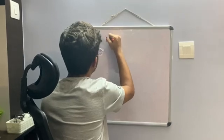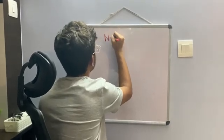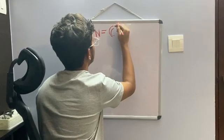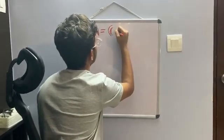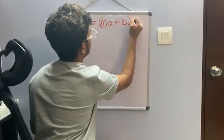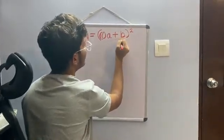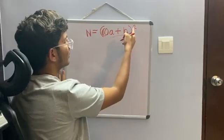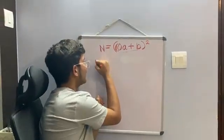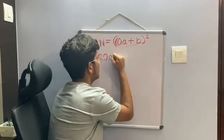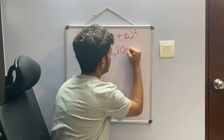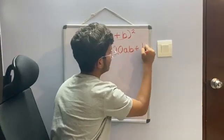So let n, which is a perfect square, equal to (10a + b) whole square. This is a two-digit number square. By the expansion, we know that this is equal to 100a² + 20ab + b².